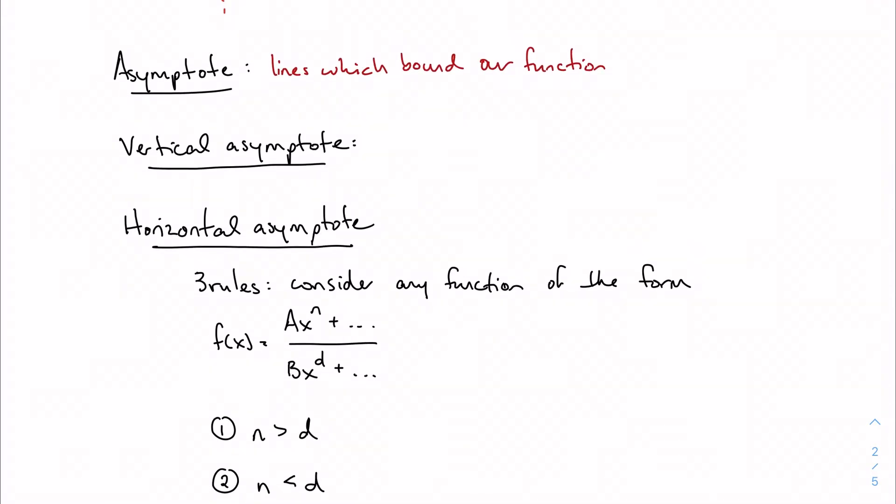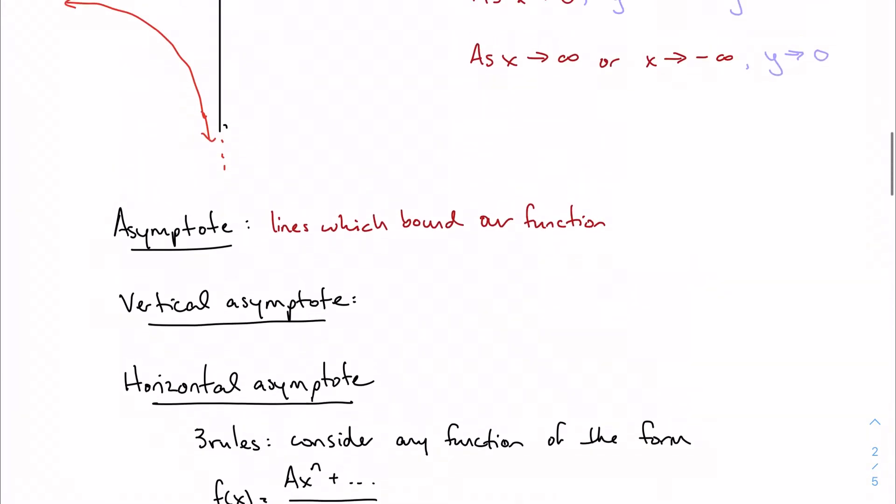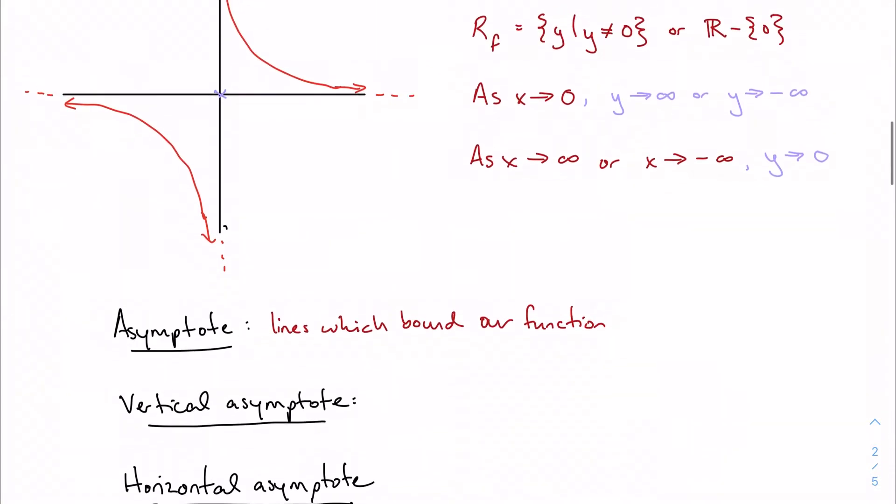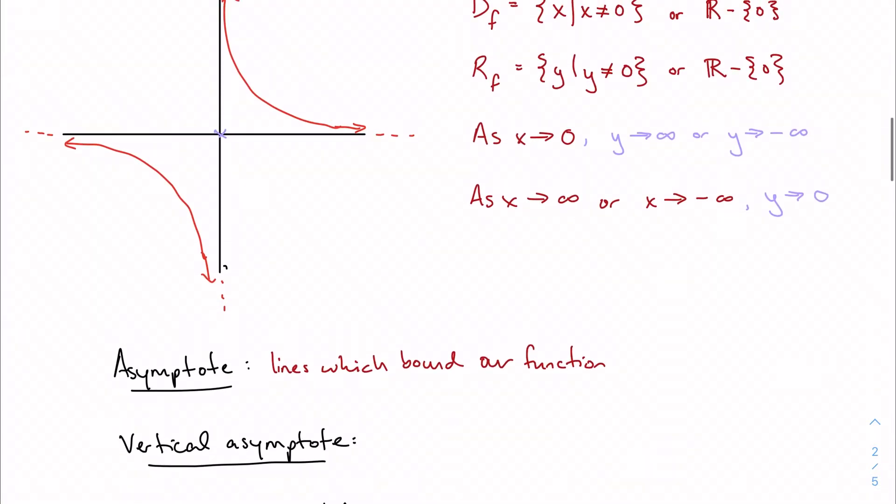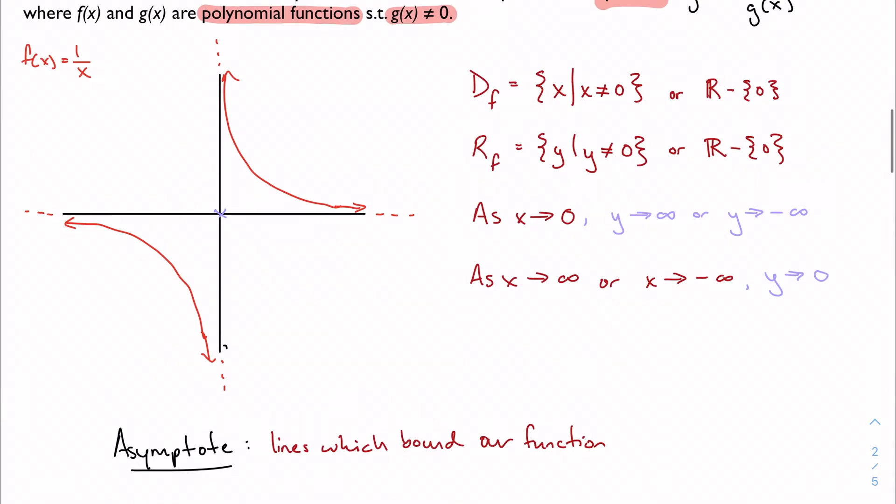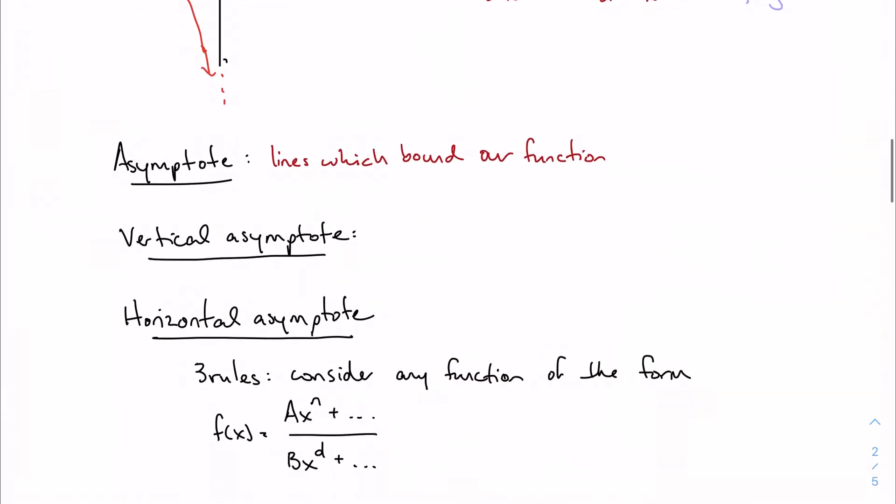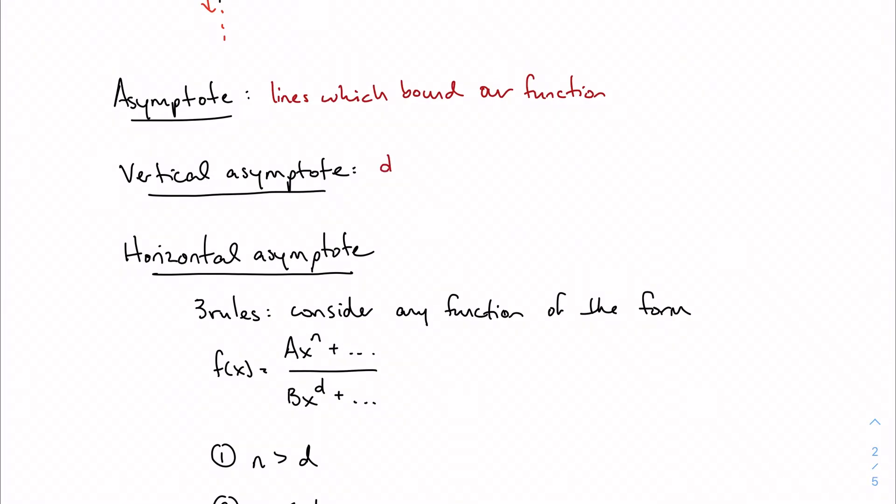Vertical asymptotes are vertical lines. More functionally speaking, my vertical asymptotes in this case are at x equals 0, which is my domain restriction. So my vertical asymptotes are my domain restrictions.